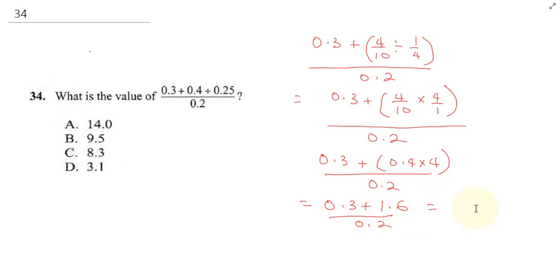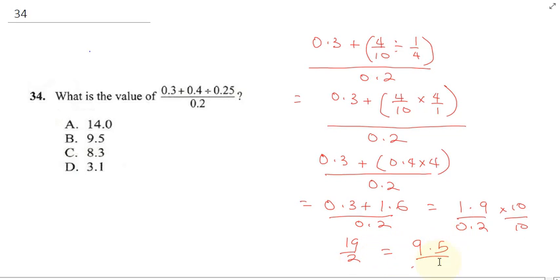This gives me 1.9 divided by 0.2. In order to multiply this I'm going to multiply both up by 10 and down by 10. This gives me 19 divided by 2, which is 9.5.